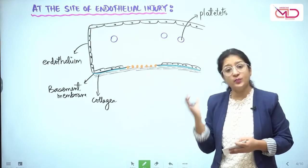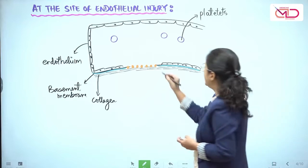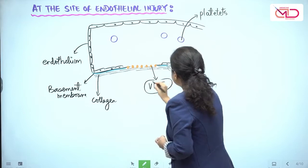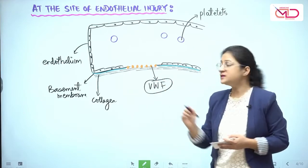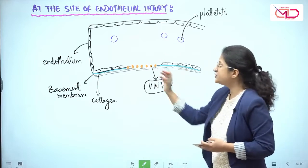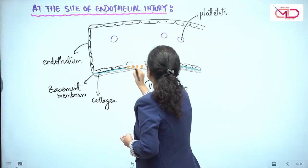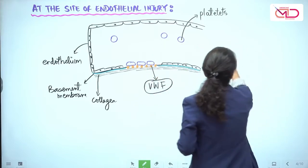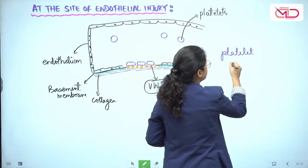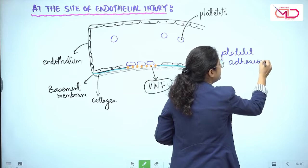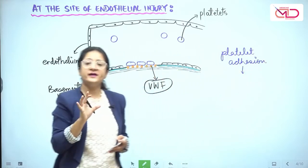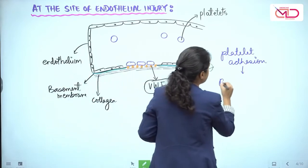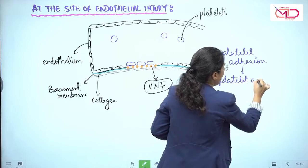Secondly, with endothelial injury the basement membrane and underlying collagen layer are exposed. What gets exposed to the circulating blood is the von Willebrand factor. The platelets have receptors for von Willebrand factor and they get attracted towards it, and these platelets then bind to the von Willebrand factors — this is platelet adhesion. This also triggers a conformational change in the platelets, meaning the platelets get activated — there is platelet activation.